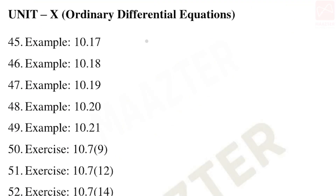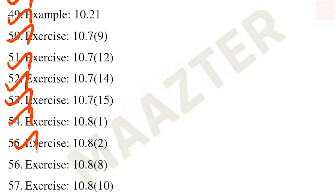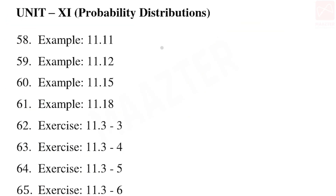Unit 10 five-mark questions: examples 10.17, 10.18, 10.19, 10.20, 10.21. Exercise 10.7 — ninth, twelfth, fourteenth, and fifteenth sums. Exercise 10.8 — first, second, eighth, and tenth sums.